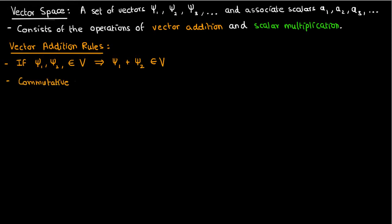Vector addition must also be commutative, so if I add psi1 and psi2 then that should be the same as adding psi2 and psi1. Vector addition must also be associative, so if I'm adding three or more vectors I can add them in any group I want.